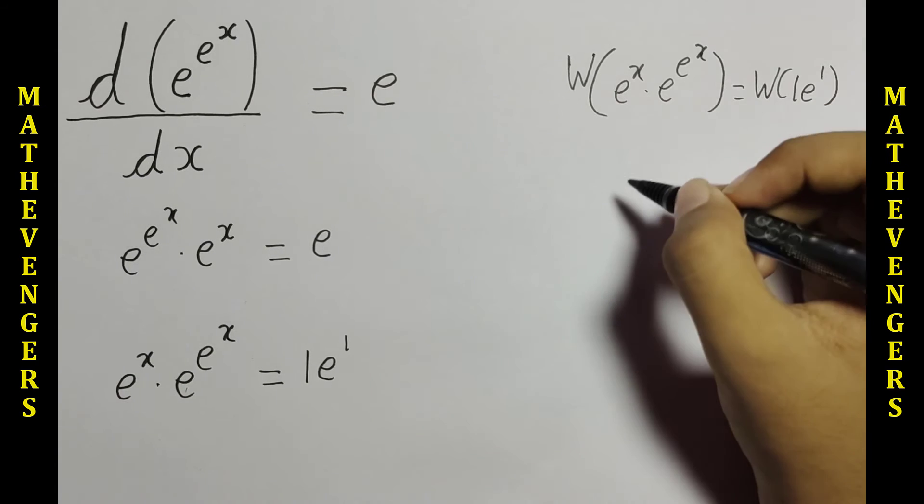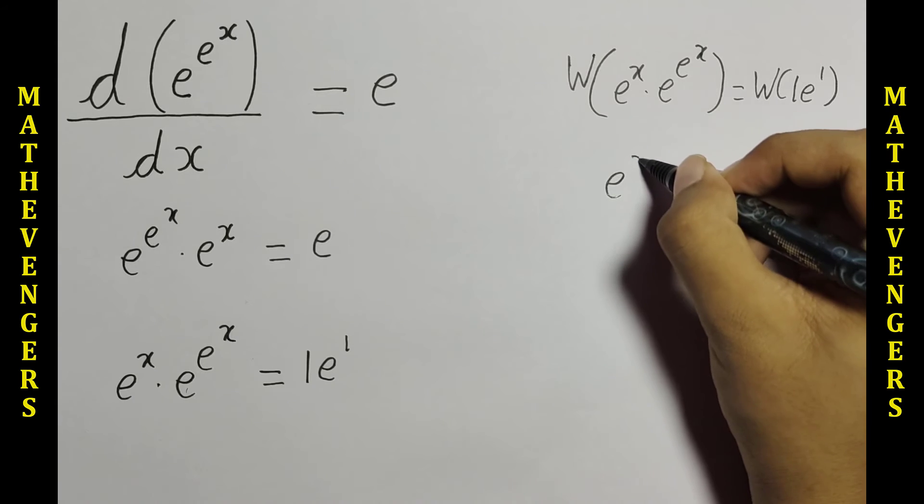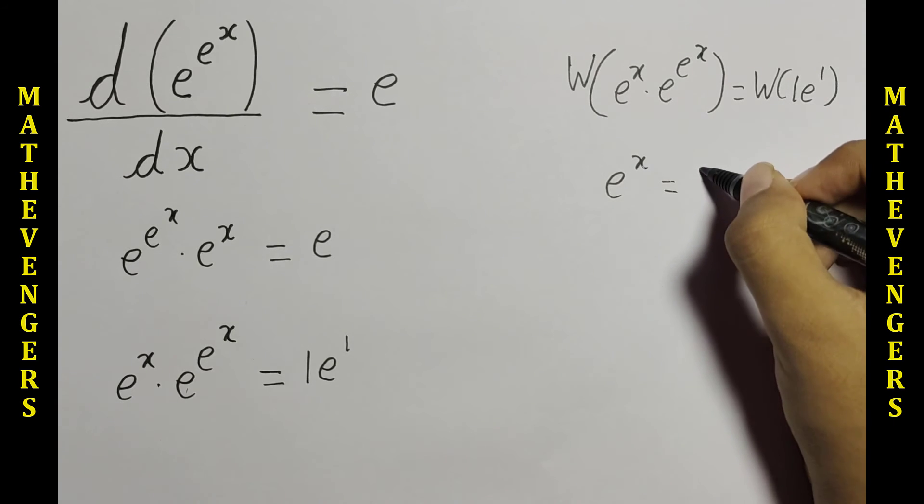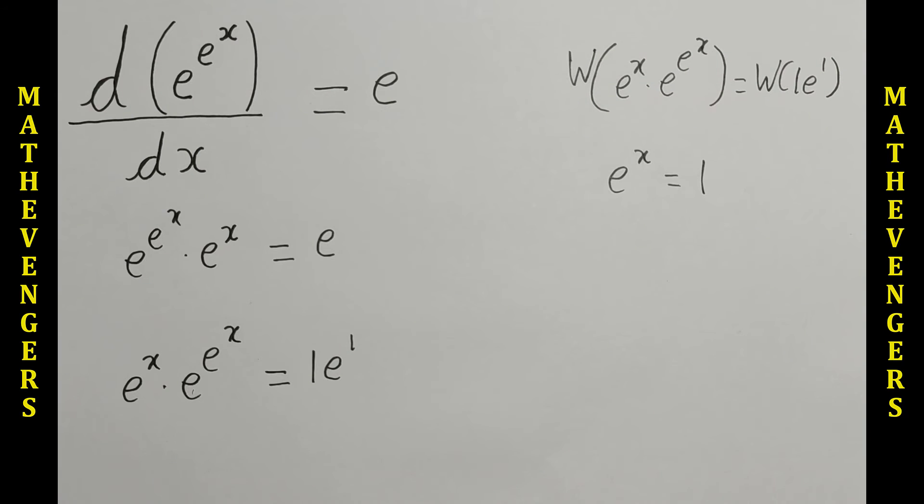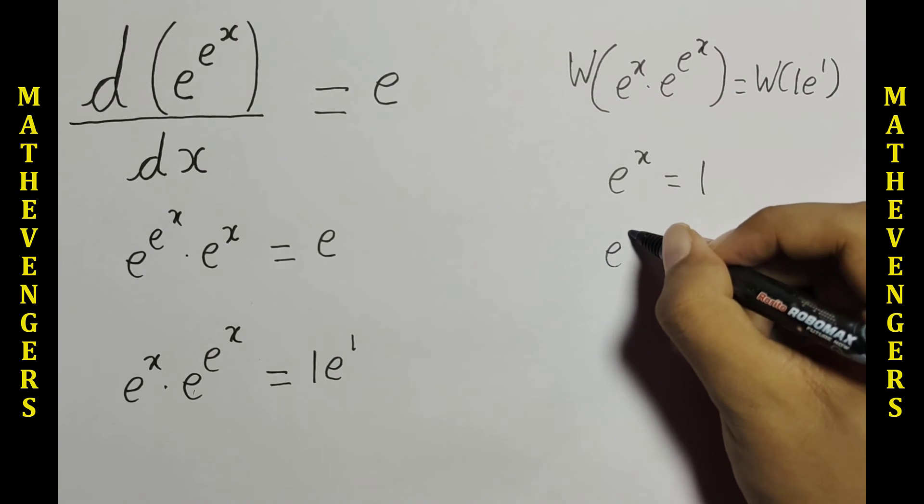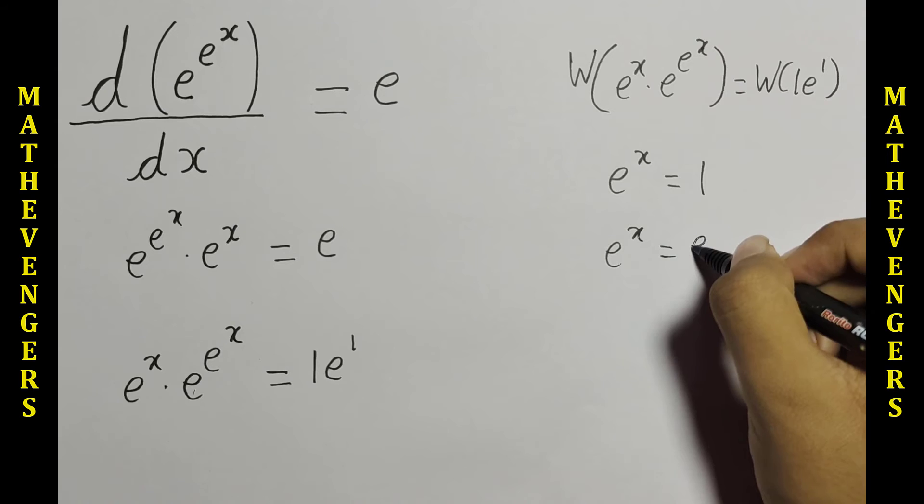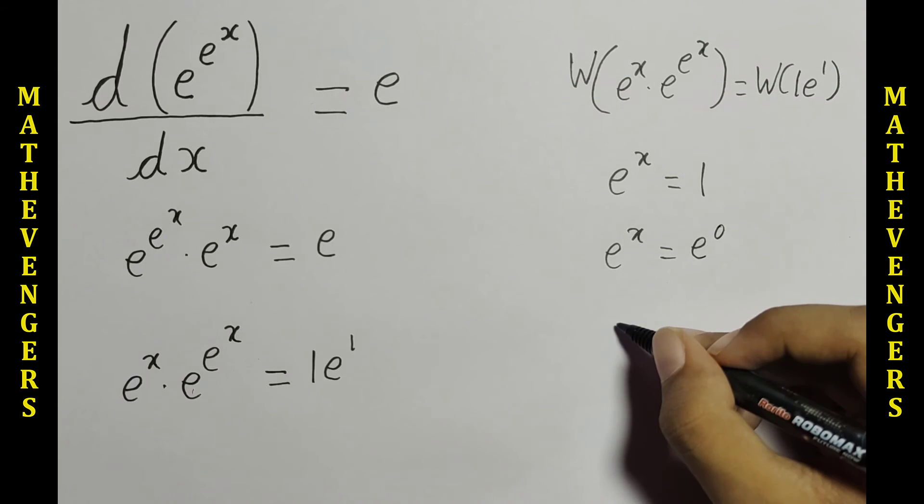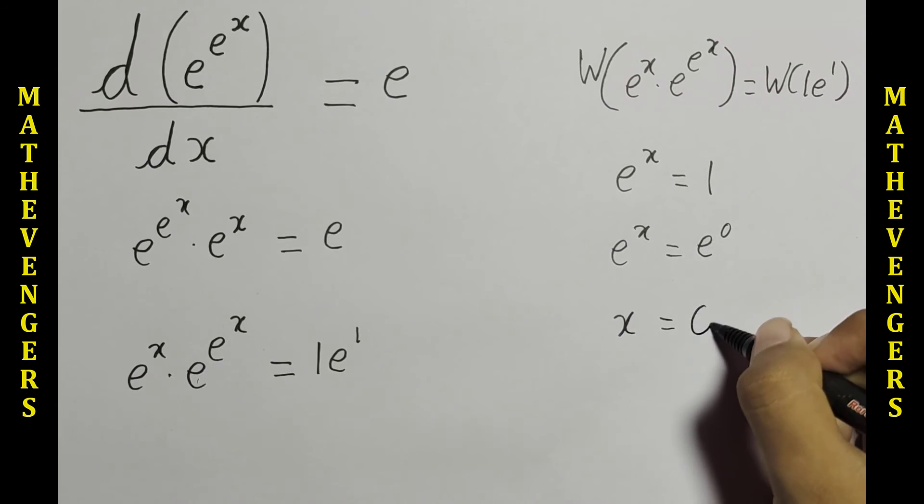So this will be equal to e to the x equals 1. We can write that e to the x equals e to the 0. So x will be equal to 0.